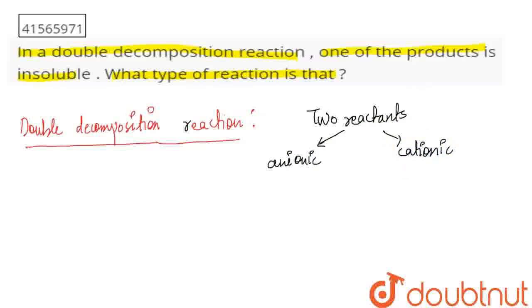So what happens with the two reactants? Either the anionic parts will exchange with each other, or the cationic parts will exchange with each other. When changes take place in both of them, we have a double decomposition reaction.